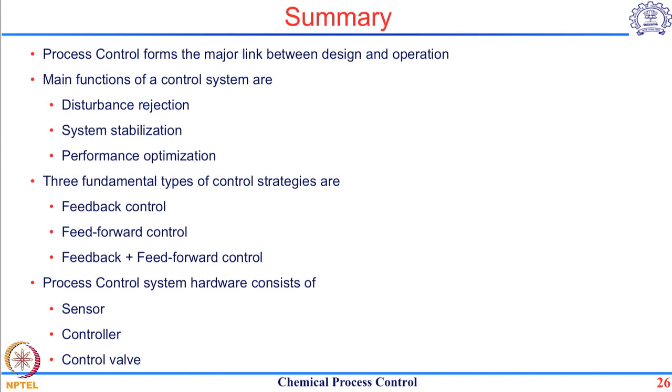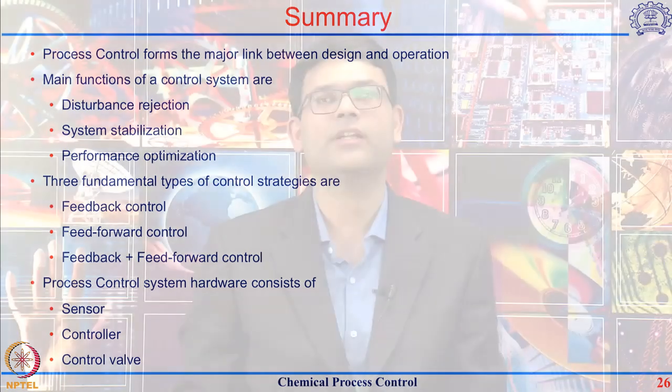And the elements of control system are an actual measuring instrument or sensor which is going to tell you where the process is at, the controller which is going to take the necessary action based on the current value of the process, and a control valve which is going to implement these changes suggested by controller into the real process.